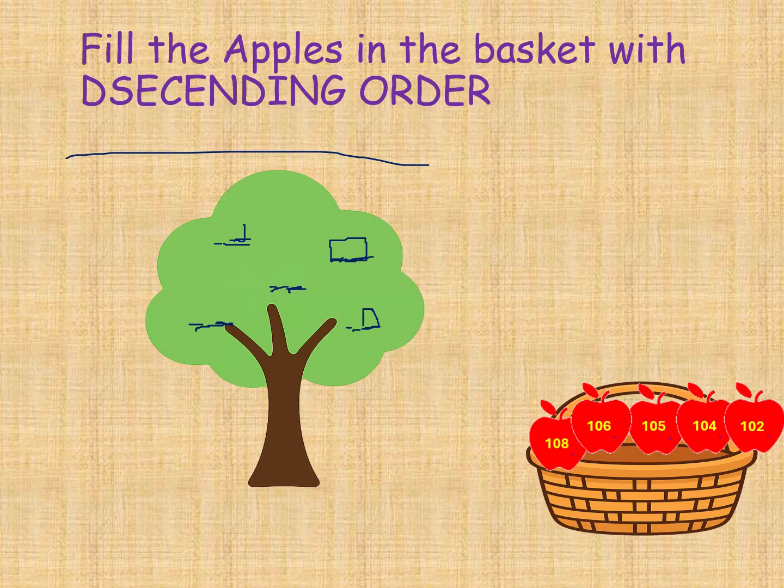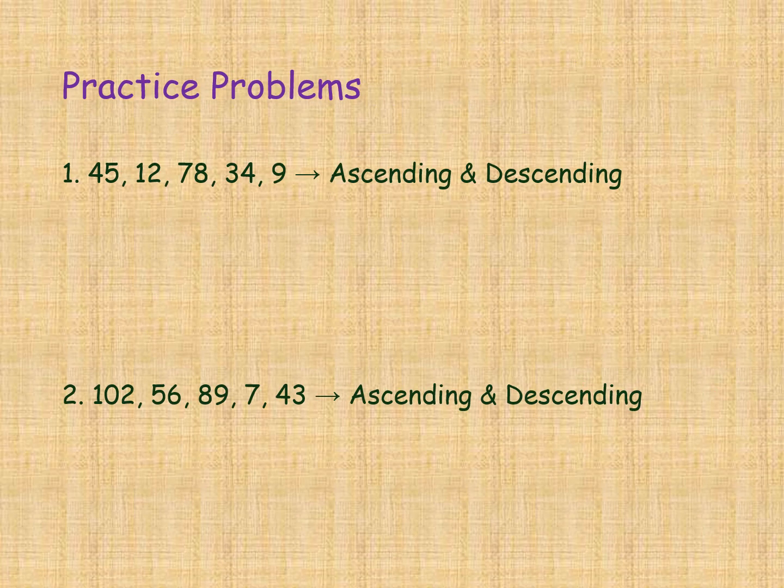And the last remaining apple, 102, also comes into the basket. So we have arranged the apples from largest to smallest — that is descending order.